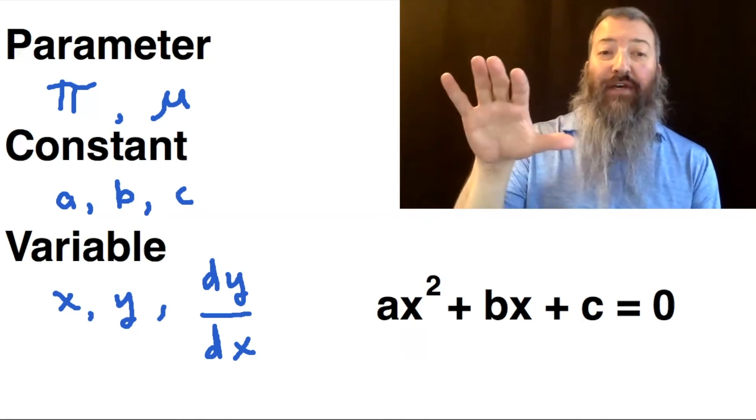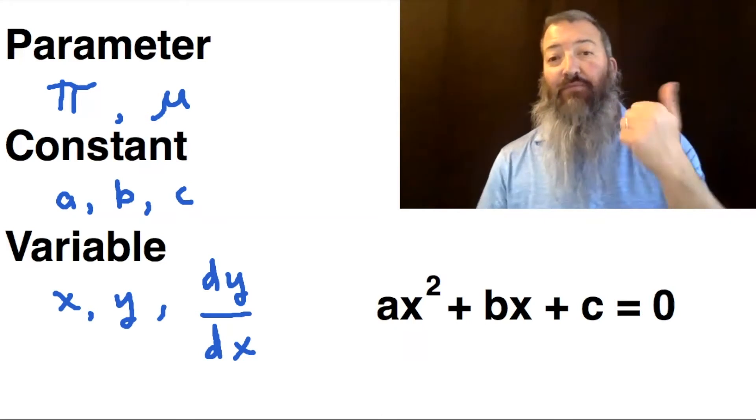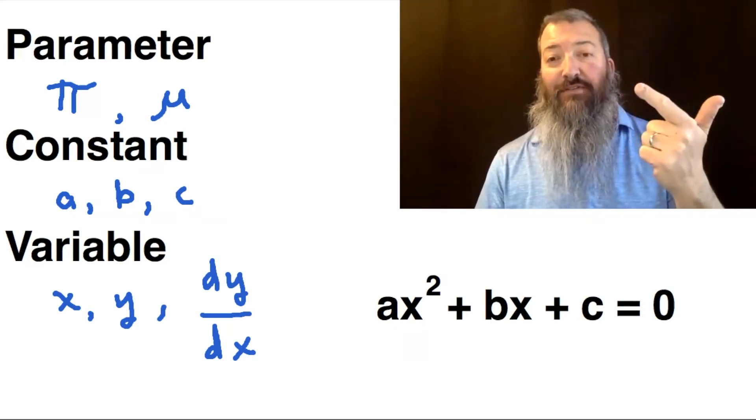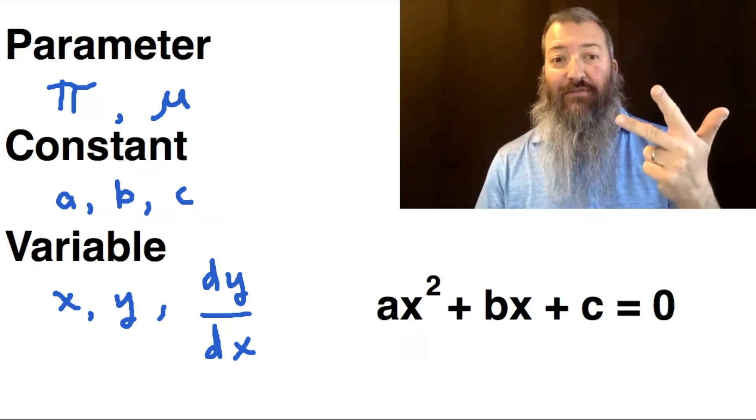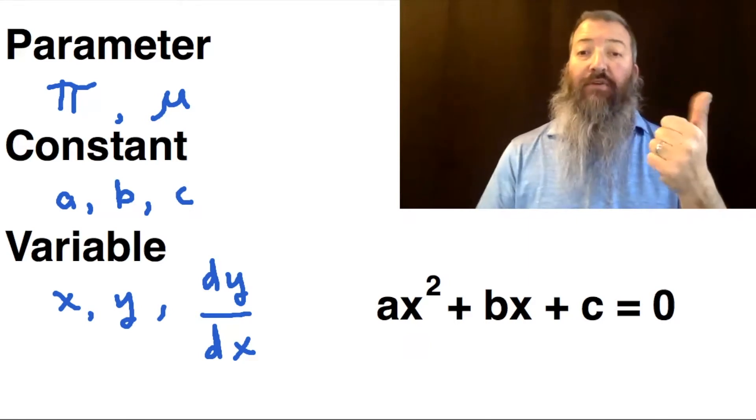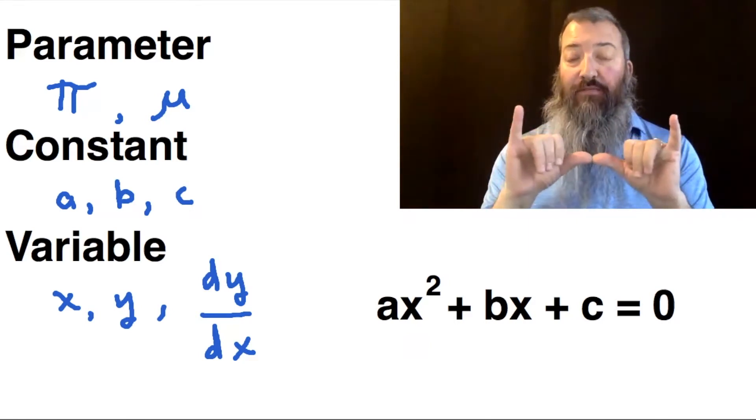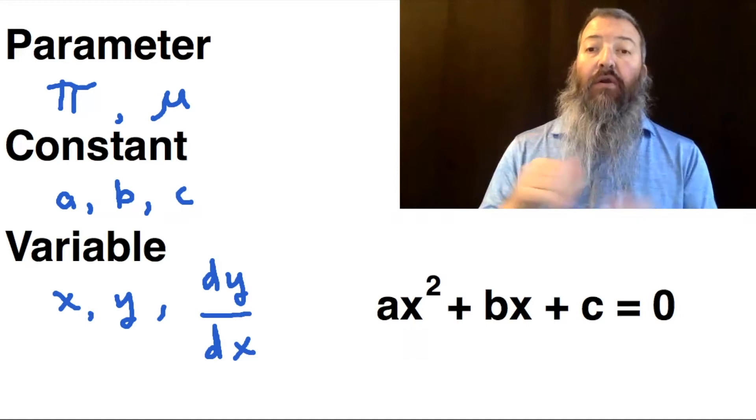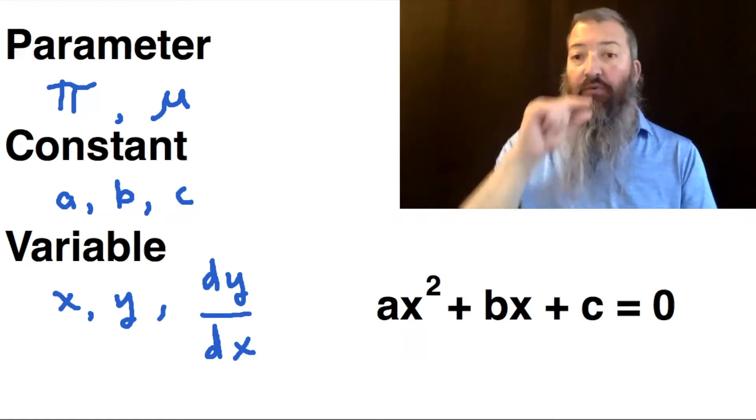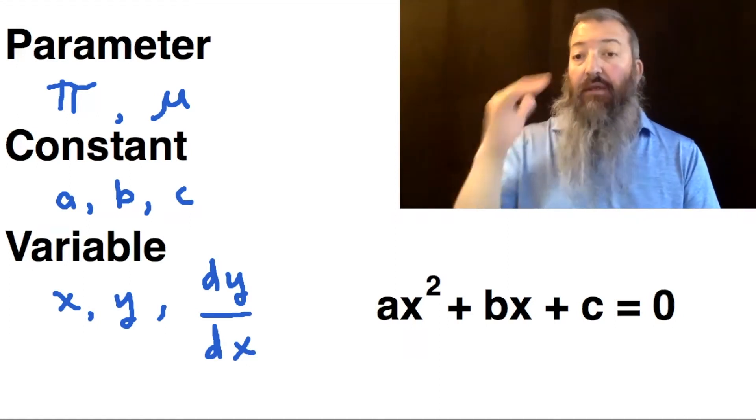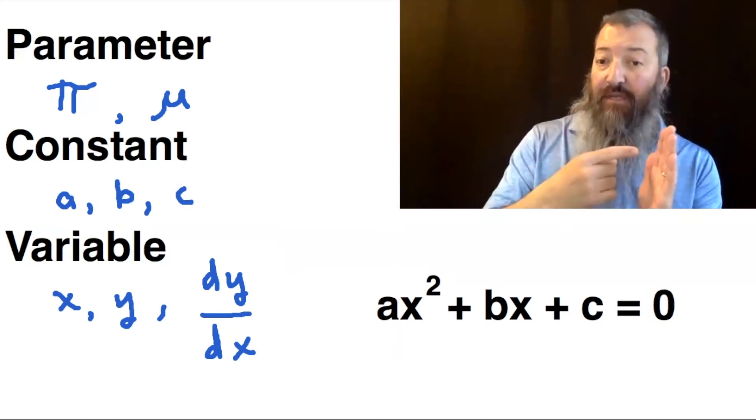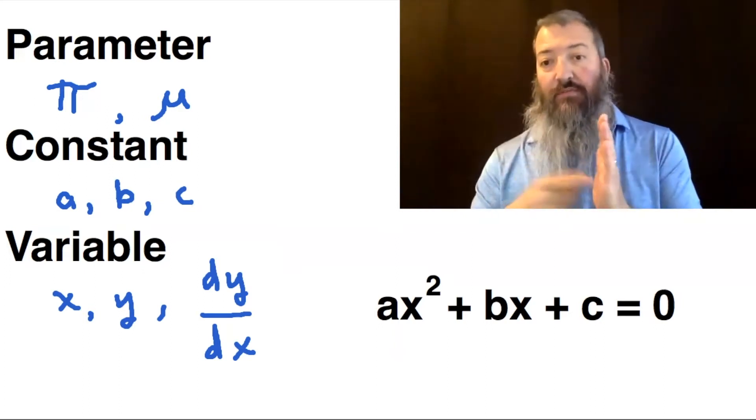Quick notes on the distinction between parameters, constants, and variables. Parameters are measurements. They are often symbolized with the Greek alphabet. They are known sometimes, not known sometimes.